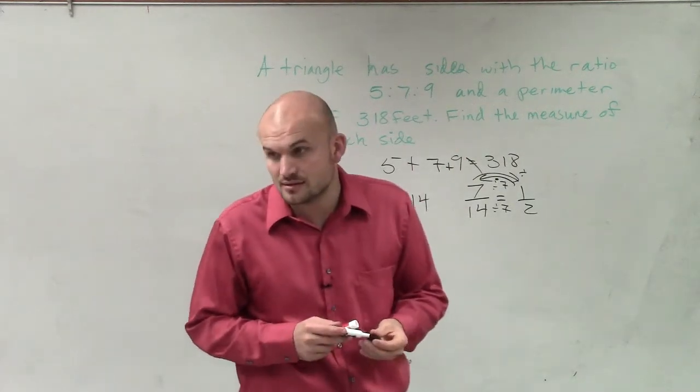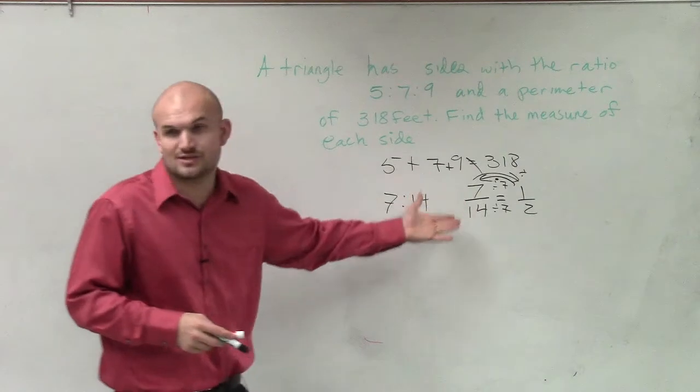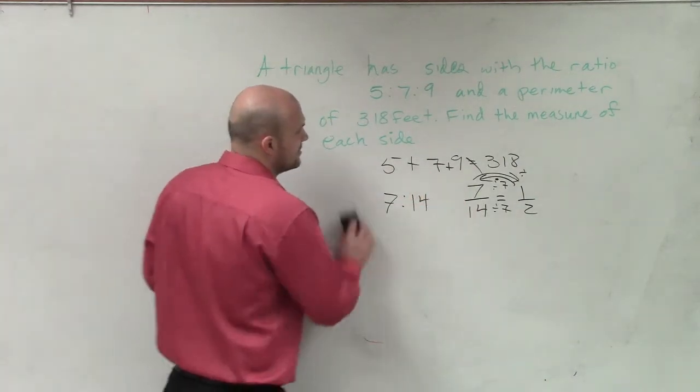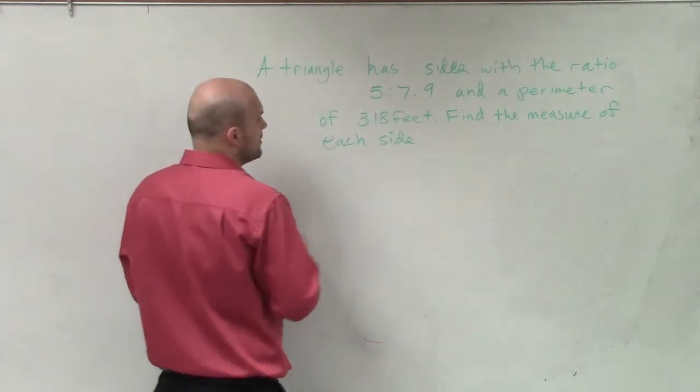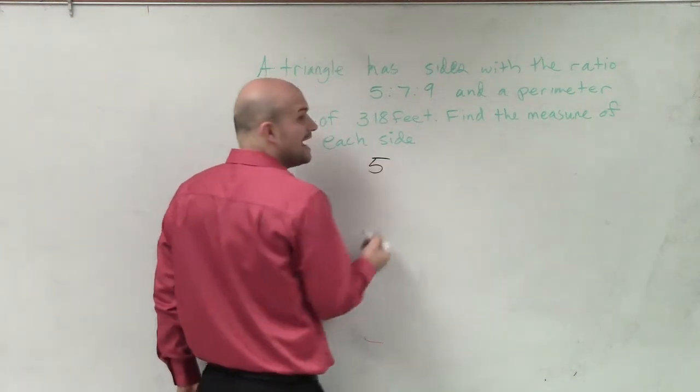I need to multiply it by a number to get to my exact side lengths. Do we know what that number is? No. This one we know because we had two numbers, but we don't know what that number is.